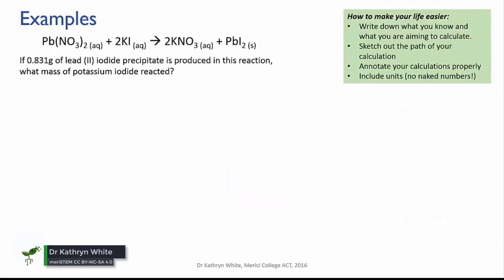So let's try a real example. We're going to perform this reaction here, lead nitrate and potassium iodide reacting to give potassium nitrate and a bright yellow precipitate of lead iodide.